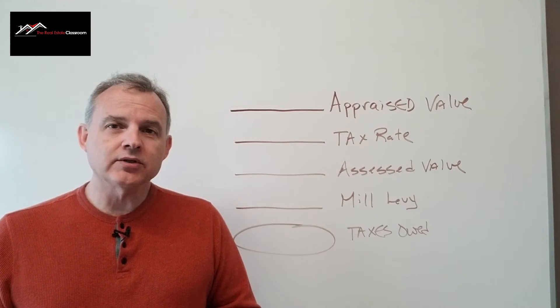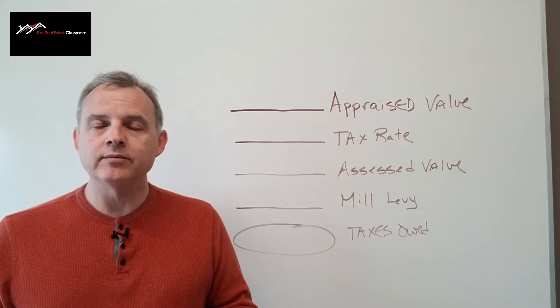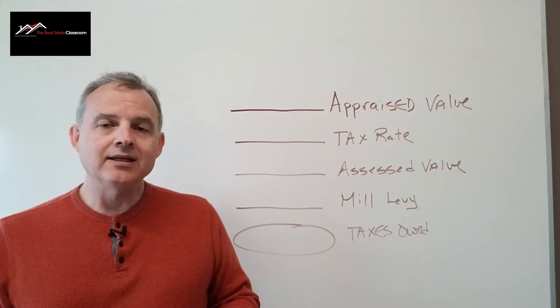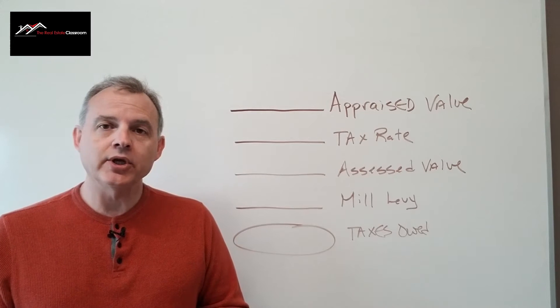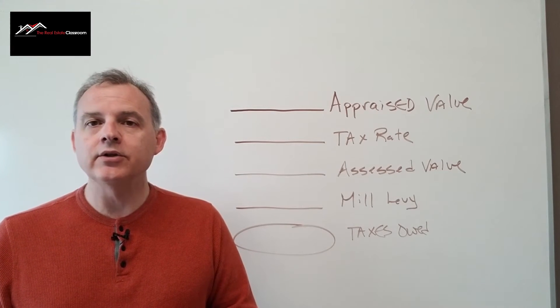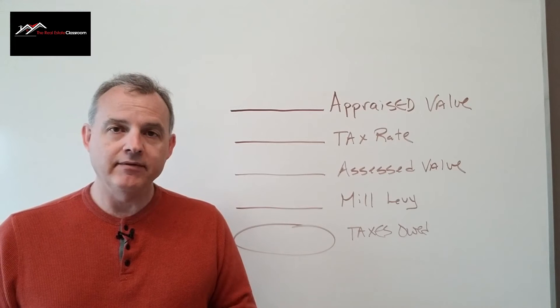In those jurisdictions where there's typically only one government agency, they typically use the dollar value method. I'm going to show you how to do that at the end of this video. First, we're going to tackle the mill levy approach.